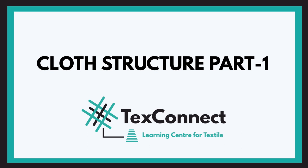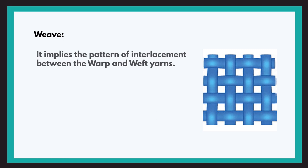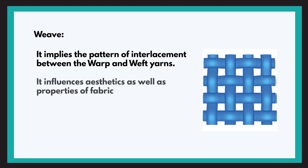Hello everyone, this is Nishit Desai and today we will be learning about a new subject, cloth structure. As the name suggests, this subject will deal with the structure and the pattern of the fabric. Previously we have learned about the weaving process — the interlacement of warp and weft threads. A weave gives the pattern in which warp and weft yarns are interlaced and influences the aesthetics and properties of the fabric.